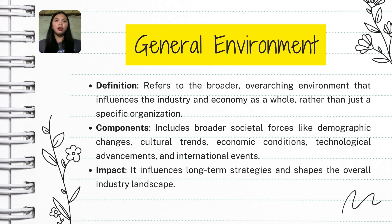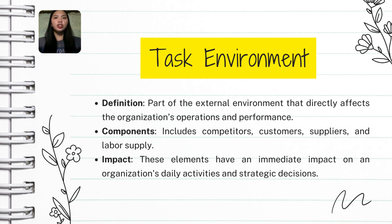The general environment refers to the broader, overarching environment that influences the industry and economy as a whole, rather than just a specific organization. Its components include broader societal forces like demographic changes, cultural trends, economic conditions, technological advancement, and international events. It influences long-term strategies and shapes the overall industry landscape. The task environment is the part of the external environment that directly affects the organization's operations and performance. Its components include competitors, customers, suppliers, and labor supply, and these elements have an immediate impact on an organization's daily activities and strategic decisions.